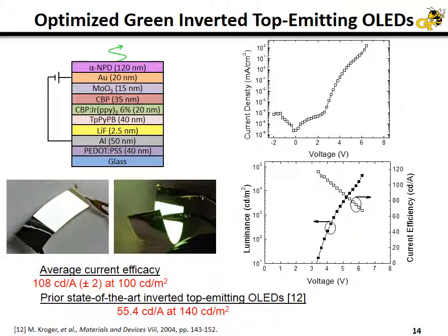The current efficacy measured from this device — 108 candela per amp at 100 candela per meter squared — was twice that of the previous state-of-the-art devices that had been published. So we were very excited about this.